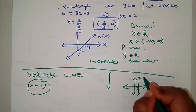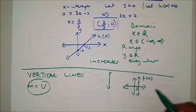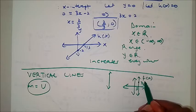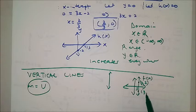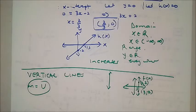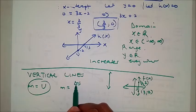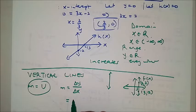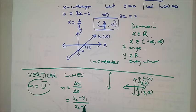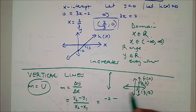Say you had a vertical line and two points on it, for example (3, 2) and (3, -2). To find the gradient you use m = (y2 - y1) / (x2 - x1). So that's (-2 - 2) / (3 - 3).